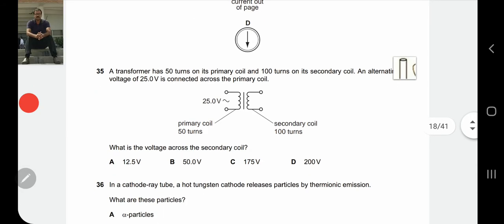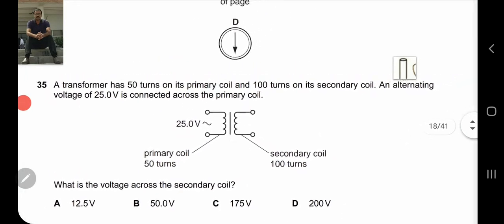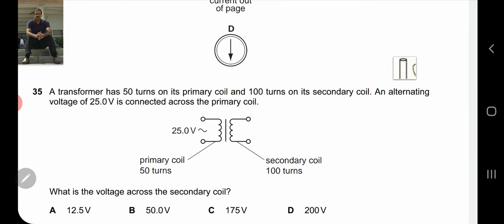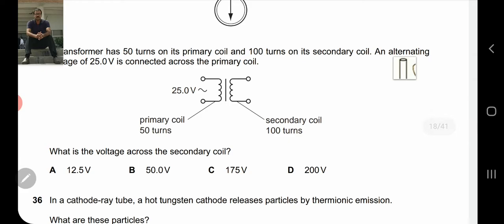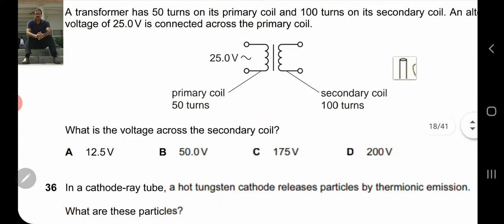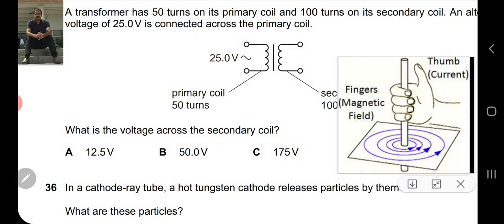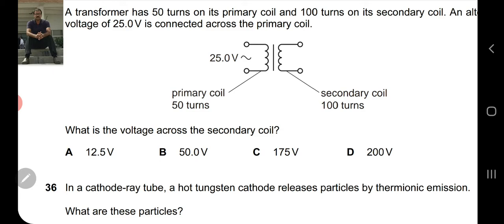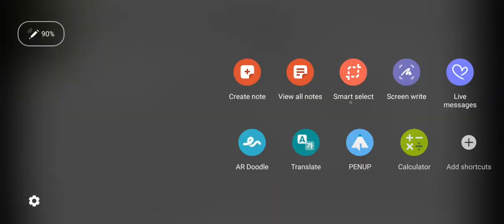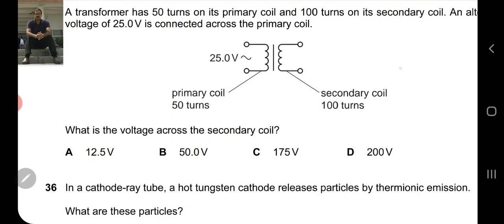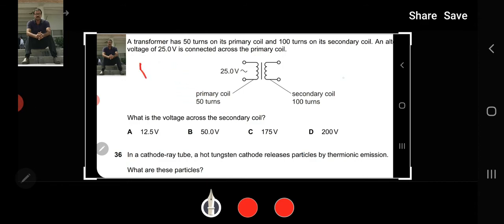Number 35. The transformer has 50 turns on its primary coil and 100 turns on its secondary coil. An alternating current voltage of 25 volt is connected across the primary coil. What is the voltage across the secondary coil? The number of turns is more, 50 to 100 turns. You can do mental math - you can make it double because the number of turns is double. So 25 volt in primary, then secondary coil will be double.